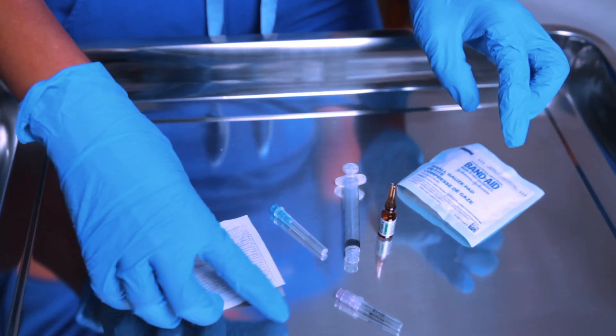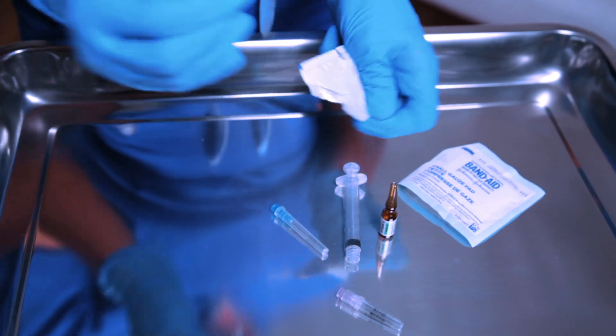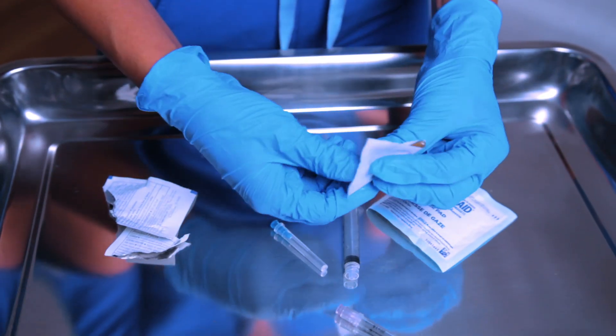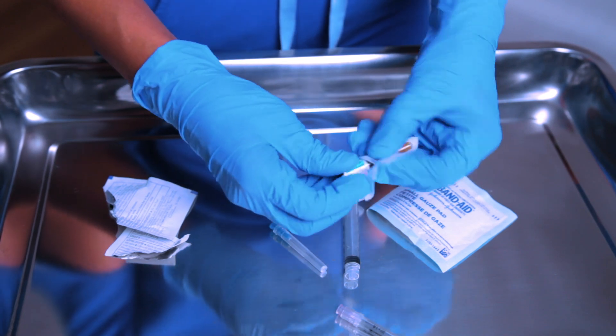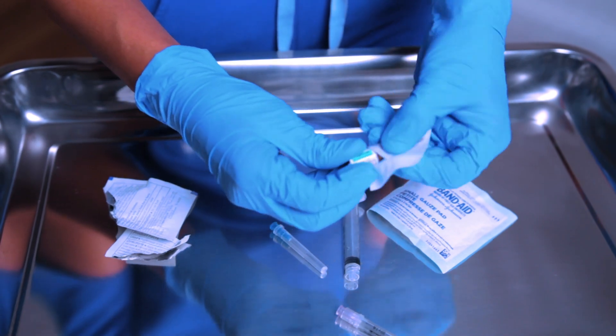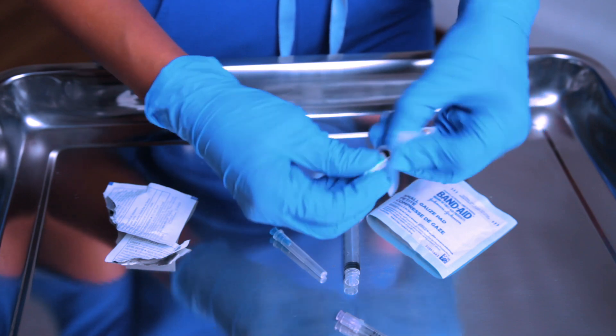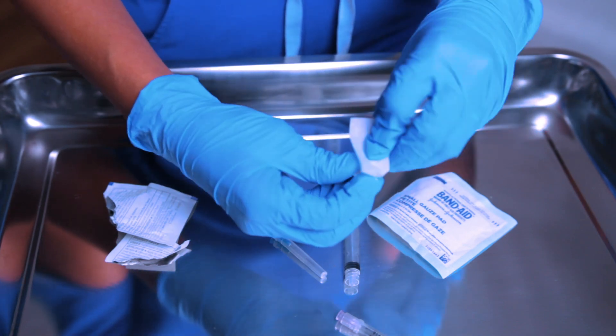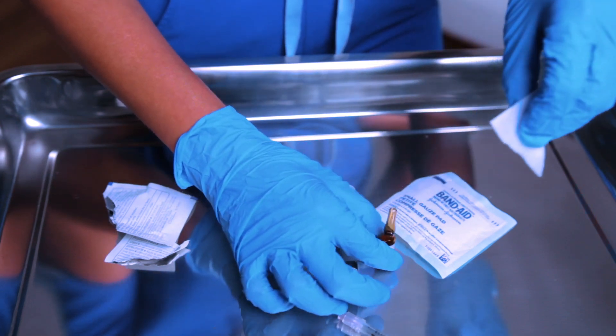You're going to gather your supplies. You're going to open up your alcohol prep. Once you have your alcohol prep open, you are going to clean the neck of the ampule because you want to make sure that that is not contaminated and that it is clean. So once that is nice and rubbed down over a few seconds, then you can put that to the side and let that air dry.